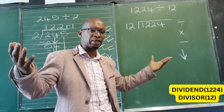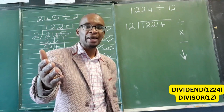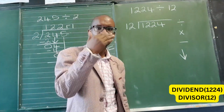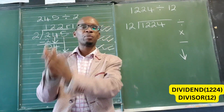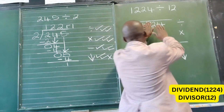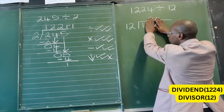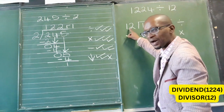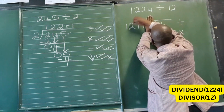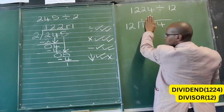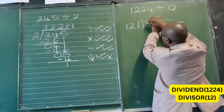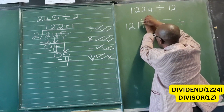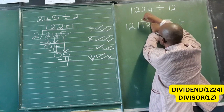You could think of this problem this way: imagine I give you 1224 rands and I say share it amongst 12 people — how much would each person get? Now we look at the first digit: how many times does 12 go into 1? We can see our divisor is bigger than 1, so 12 cannot go into 1. We need a bigger number, so we open up and make use of 12.